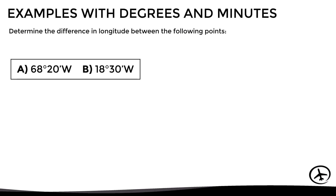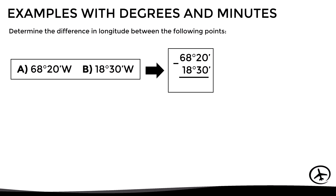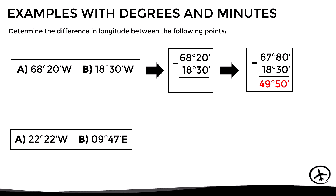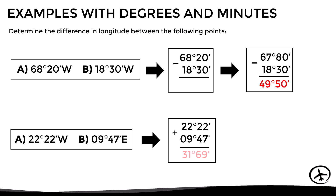Let's now look at some examples using degrees and minutes. In this first case both points are in the western hemisphere, so we have to subtract the longitudes. However, subtracting 20 minus 30 can be difficult if done manually, so it is better to convert one of the degrees into 60 minutes, so that we now have 67 degrees and 80 minutes instead of 68 degrees and 20 minutes. This way the operation is much easier, and we obtain a difference in longitude of 49 degrees and 50 minutes. In this other case the points are located in different hemispheres, so we have to add the longitudes. Here we obtain a difference in longitude of 31 degrees and 69 minutes. However, to express it correctly we must convert 60 of those minutes into 1 degree, so we get 32 degrees and 9 minutes.